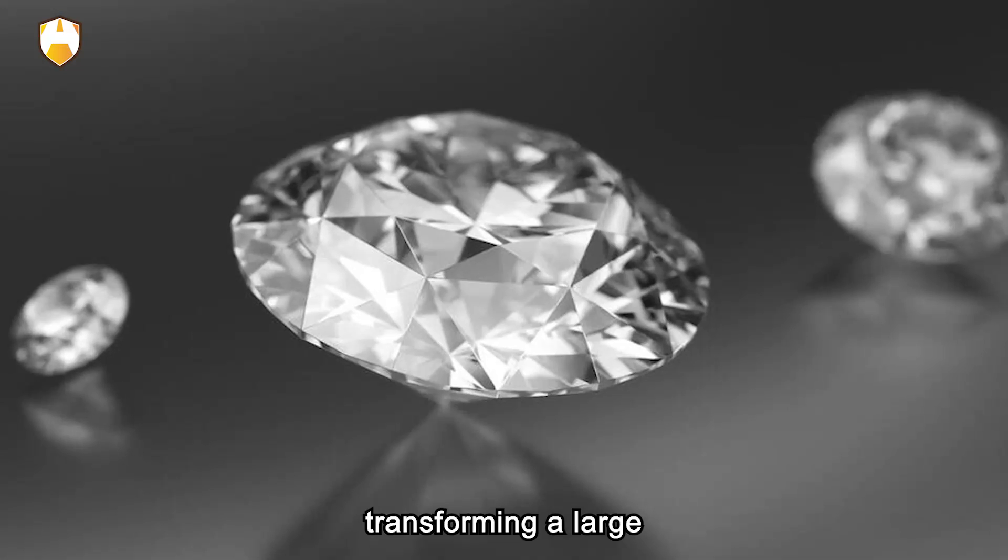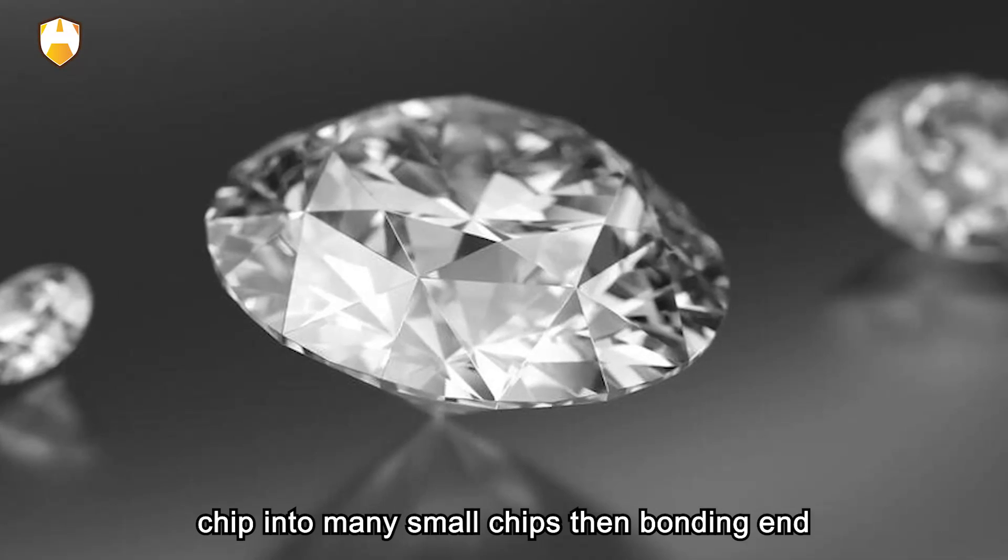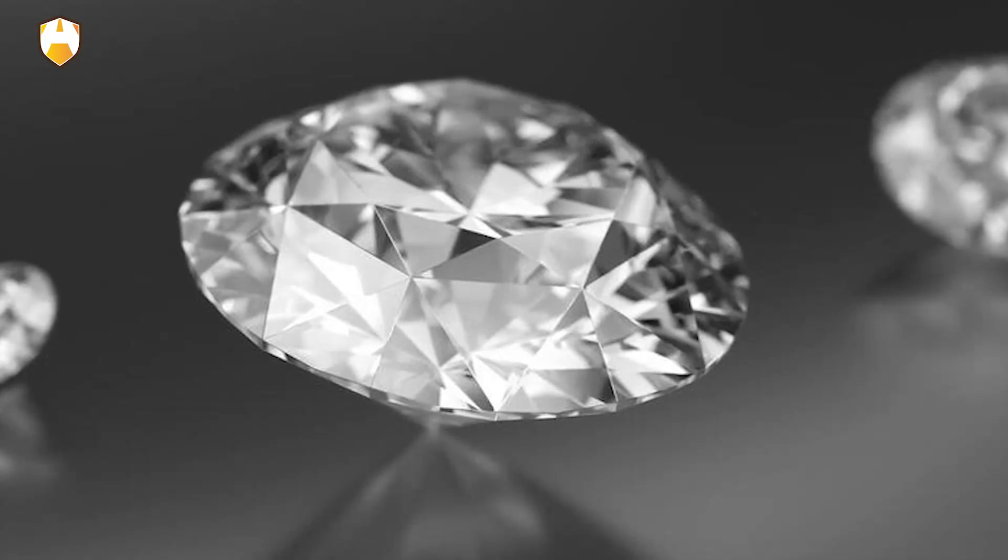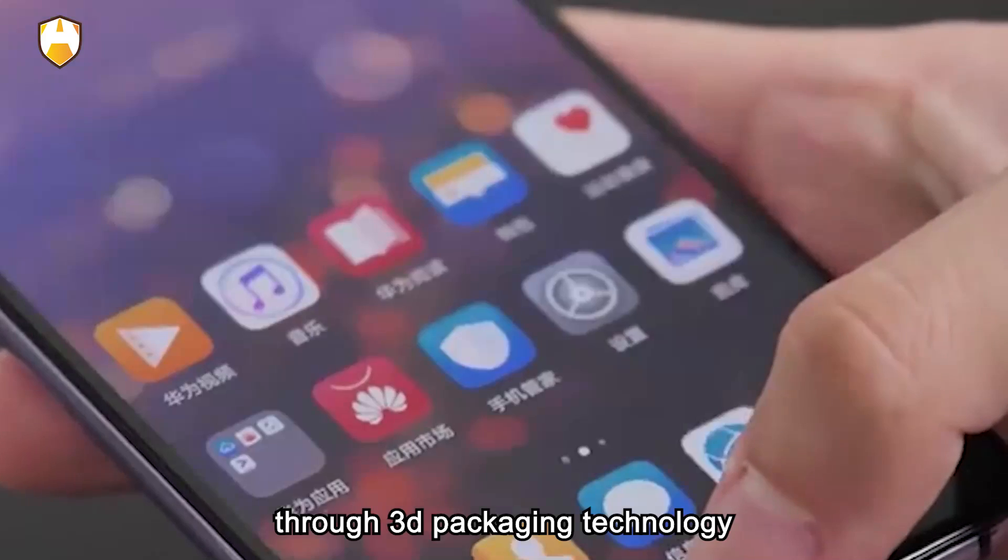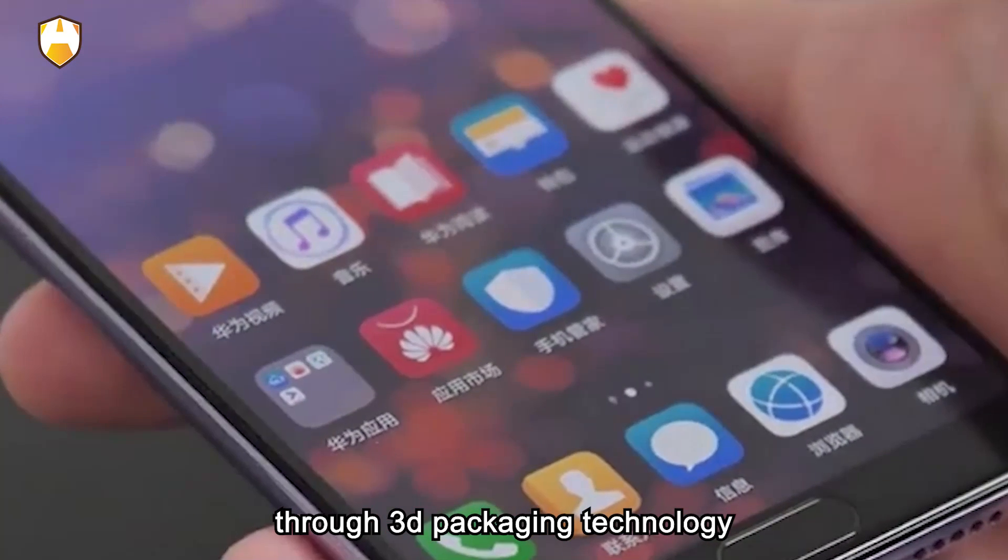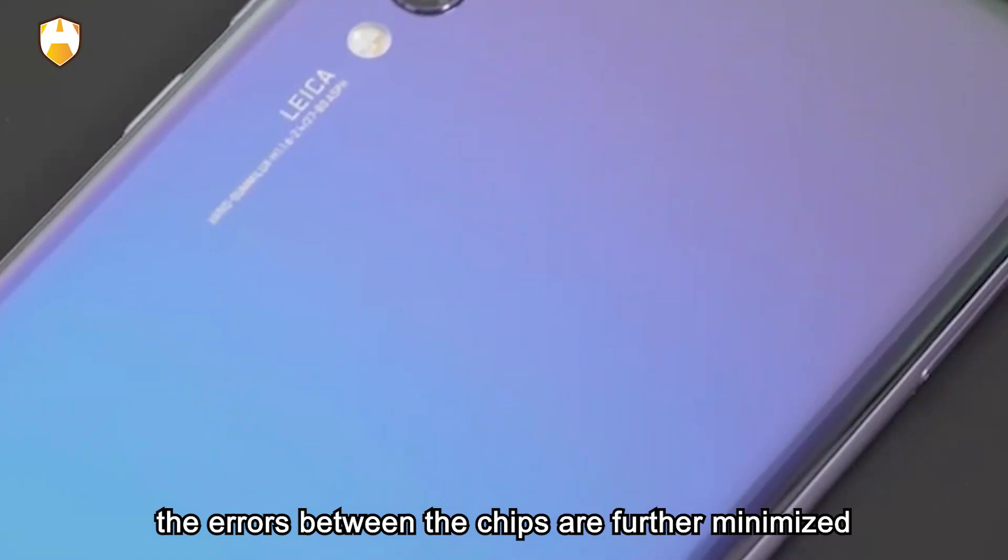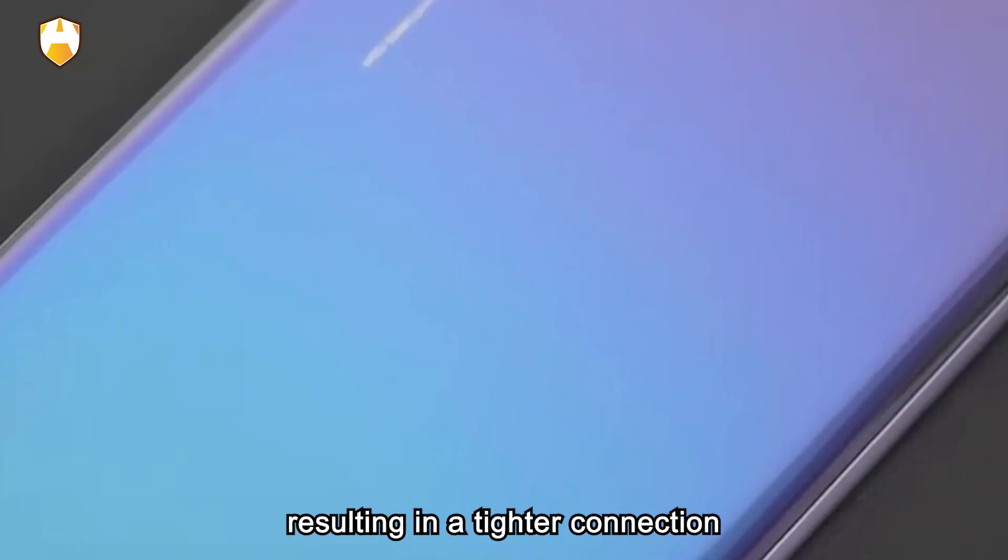Hybrid bonding: transforming a large chip into many small chips, then bonding and encapsulating the small chips. Through 3D packaging technology, the errors between the chips are further minimized, resulting in a tighter connection.